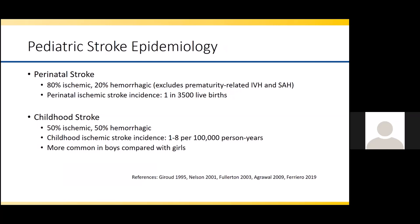With regards to the epidemiology of pediatric stroke, starting with perinatal stroke: perinatal stroke is ischemic 80% of the time and hemorrhagic 20% of the time, when excluding patients with prematurity-related intraventricular hemorrhage and subarachnoid hemorrhage. The incidence of perinatal stroke is about 1 in 3,500 live births, which is fairly common. Childhood stroke, on the other hand, is about half ischemic and half hemorrhagic, with an incidence ranging from about 1 to 8 per 100,000 person years. Childhood stroke is more common in boys compared with girls, which is not a difference seen in perinatal stroke.